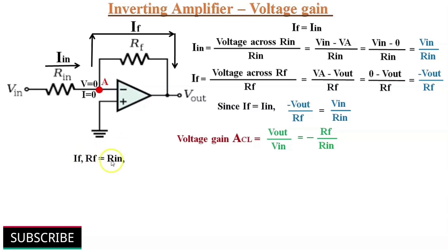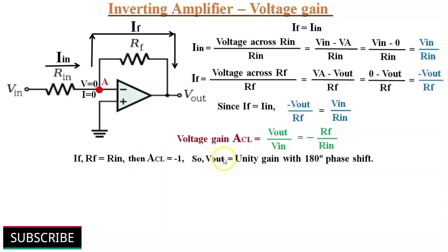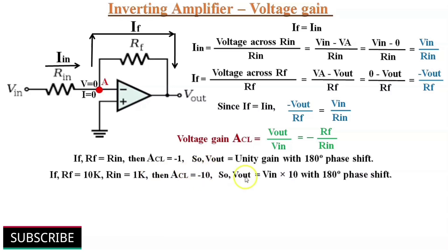The negative sign indicates that the output signal is inverted as compared to the input signal. So the closed loop voltage gain ACL of an inverting amplifier is the ratio of feedback resistance RF to the input resistance Rin. If RF is equal to Rin, then ACL is equal to minus RF by Rin, which gives minus 1. So the op-amp circuit provides unity voltage gain with 180 degrees phase inversion. If RF equals 10 kilo ohms and Rin equals 1 kilo ohm, then ACL becomes minus 10. So the op-amp circuit provides output voltage exactly equal to Vin multiplied by gain 10, along with 180 degrees phase inversion. If we select precise values for RF and Rin, we can obtain a wide range of voltage gains. Thus the inverting amplifier provides constant voltage gain.